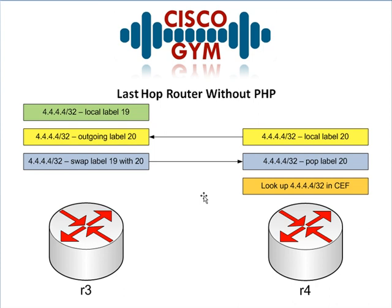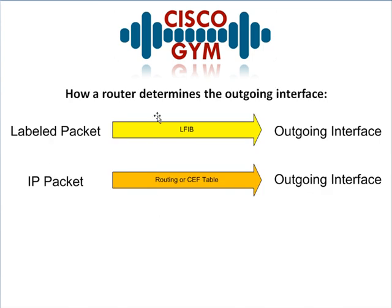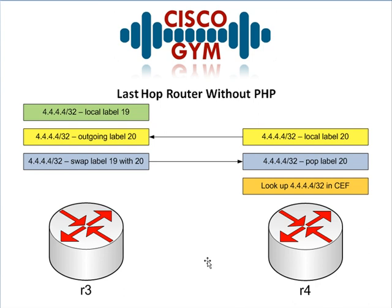The takeaway here is that in normal MPLS operation, this last-hop router is going to have to do two lookups — one in its LFIB and then one in its routing table. In a small network, that's not a big deal — it's an extra step. But if R4 is a provider edge router sitting on the edge of the internet with 300,000 routes, you're going to want to make that operation more efficient and not do two lookups if you can only do one. So how do we get rid of one of these lookups?